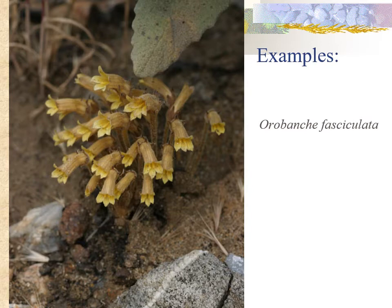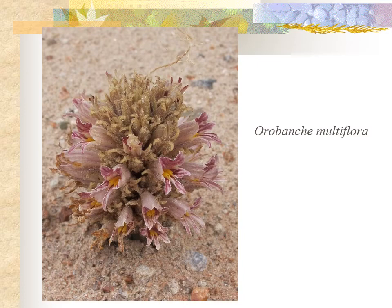Orobanche fasciculata is perhaps one of our most common holoparasitic members of the Orobankaceae within Colorado — you can tell it's a holoparasite immediately because it has no chlorophyll at all. Orobanche multiflora is another holoparasitic member; the epithet 'multiflora' is apt because this species has numerous flowers. As a fun fact, all members of the genus Orobanche are holoparasites.